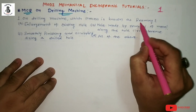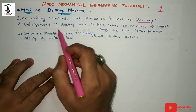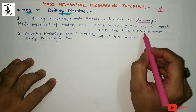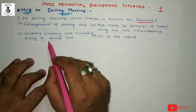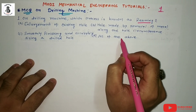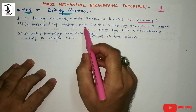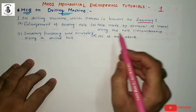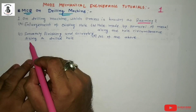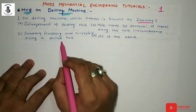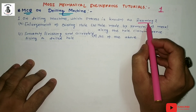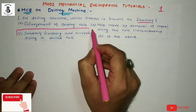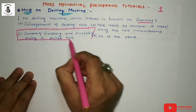Which process is known as reaming? Option A: enlargement of existing hole. Option B: hole made by removal of metal along the hole circumference. Option C: smoothly finish and accurately sizing a drill hole. Option D: all of the above. Option A is called boring, not reaming. Option B describes drilling. The right answer is C — reaming is used for smoothly finishing and accurately sizing a drill hole.